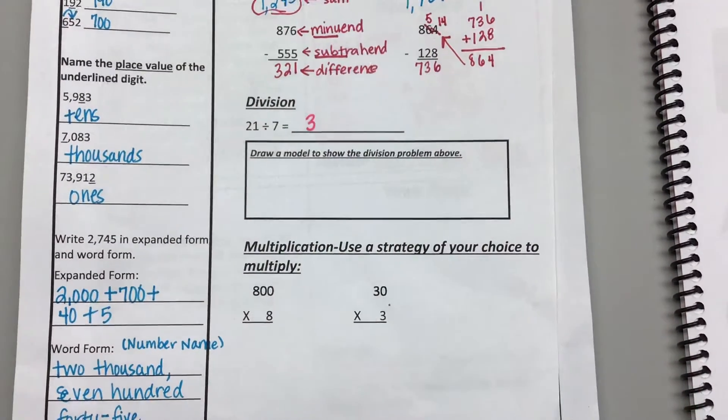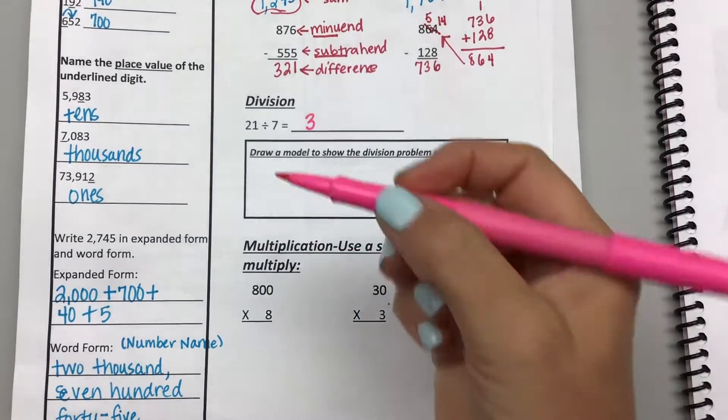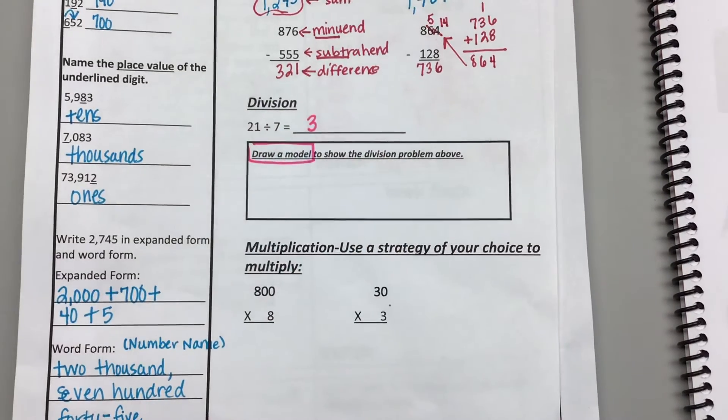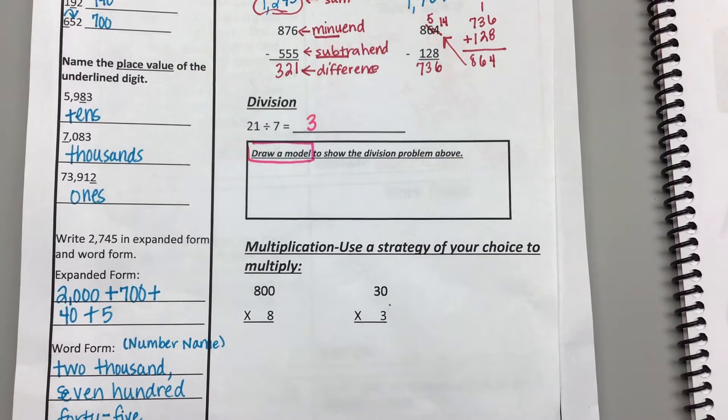Now, the trick here is not the 21 divided by 7, but that the question says draw a model. What is a model in math? What does that mean? Who knows what a model in math is? MJ.